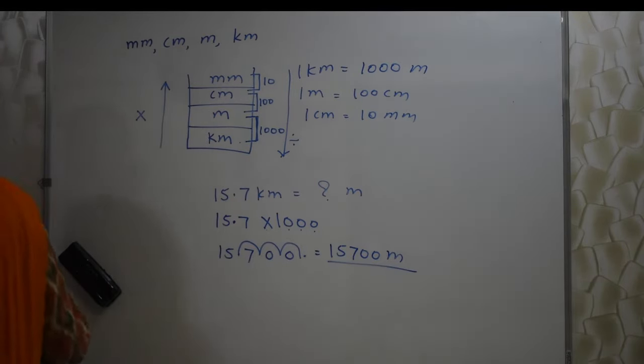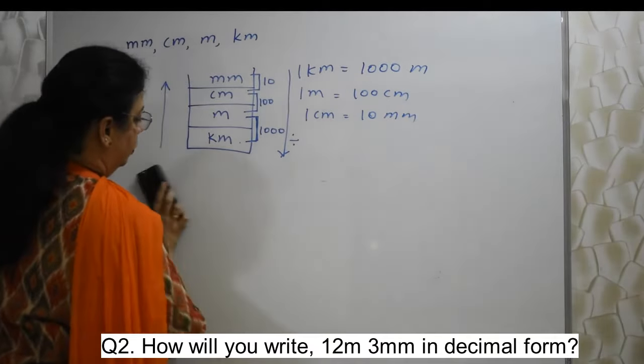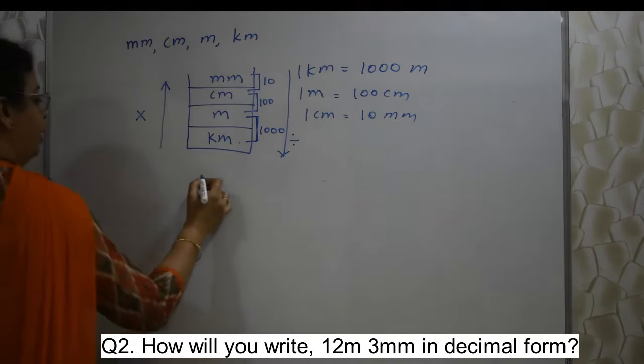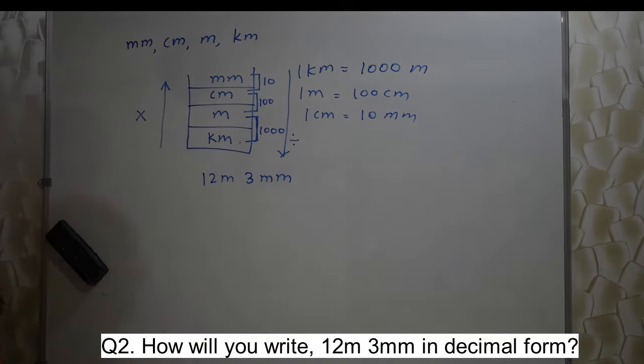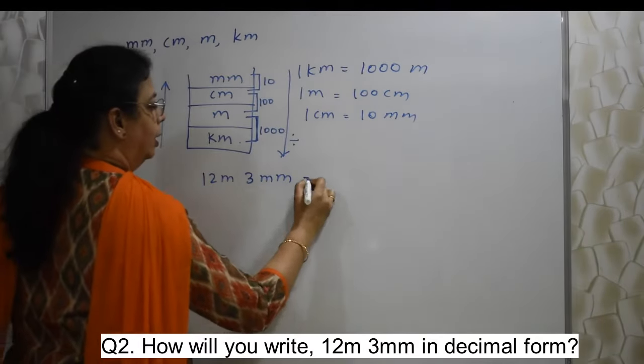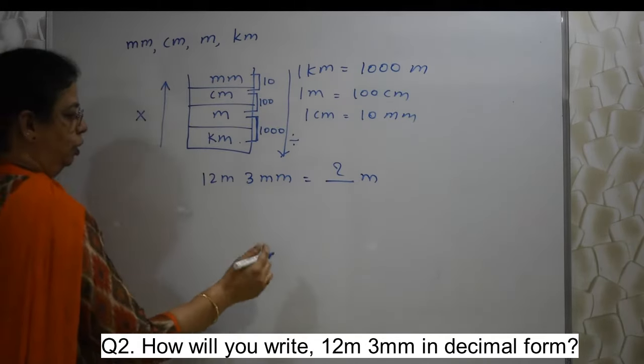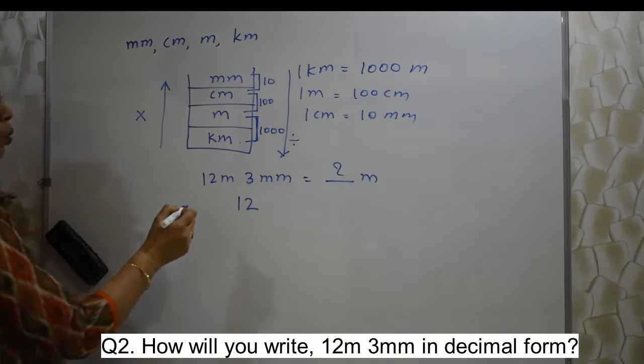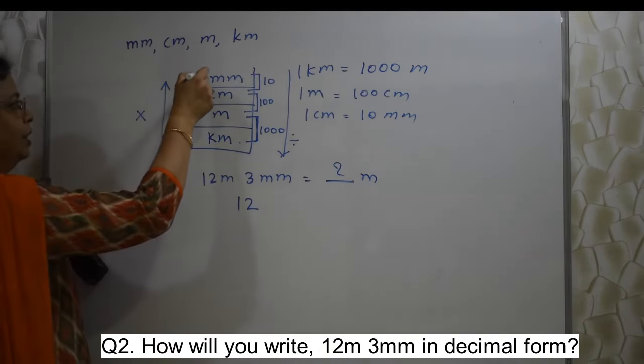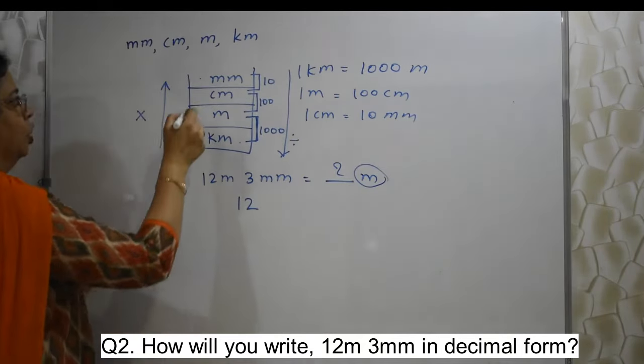Let's move ahead with the next sum. How will you write 12 meter, 3 millimeter in decimal form? Or rather in meter. How many meters? See, 12 meter is meter only, so there is no tension. 12 is same. 3 millimeter, I need to convert into meter. Millimeter is here. I need to convert that into meter so that I can write whole thing as meter. So millimeter to meter.